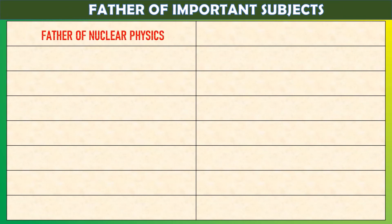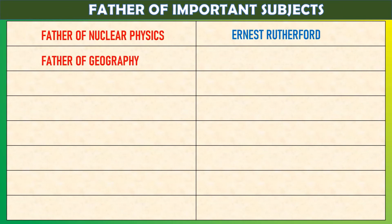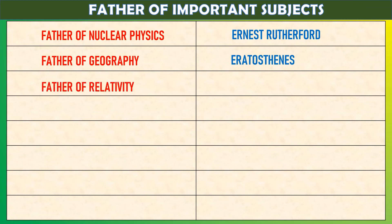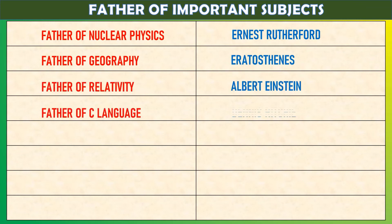Father of nuclear physics: Ernest Rutherford. Father of geography: Eratosthenes. Father of relativity: Albert Einstein.